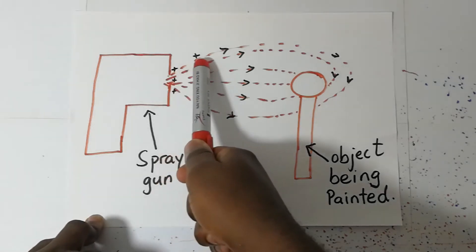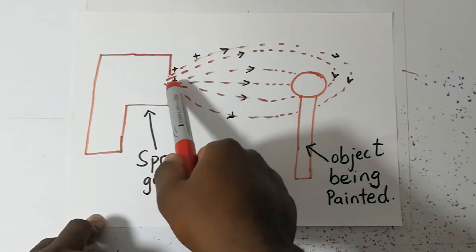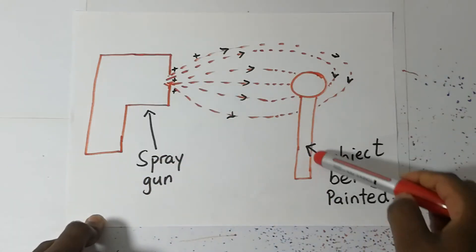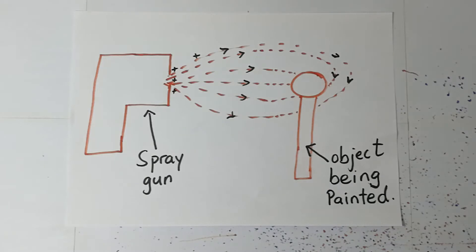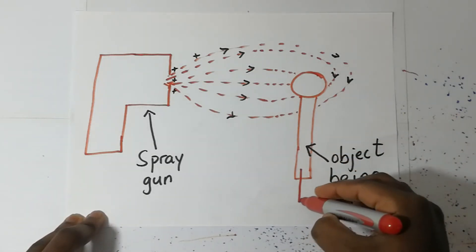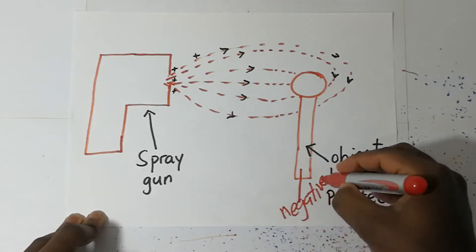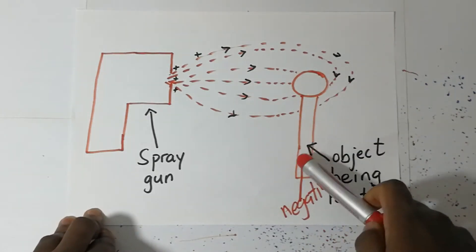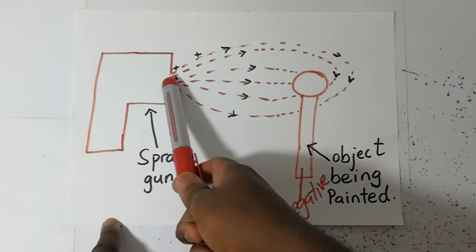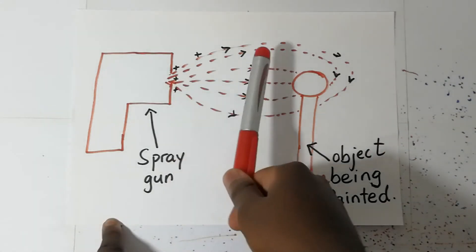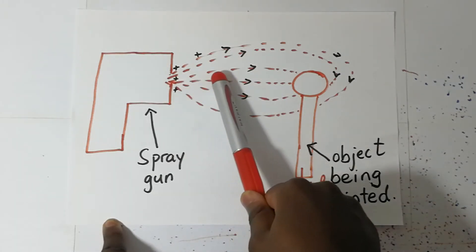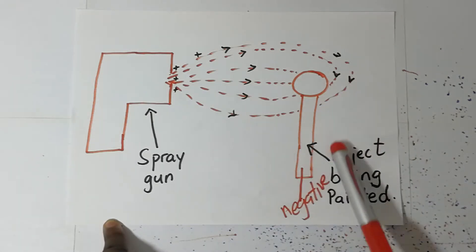It is charged positively as it's moving out of the spray gun. The object being painted is connected to the opposite charge. In this case, we connect it to a negative electrode. So these positively charged particles are attracted to the negatively charged object.